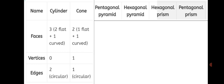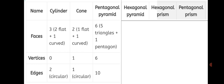Next, pentagonal pyramid. Pentagonal means it will have 5 triangles. Faces: a pentagonal pyramid has 5 triangles at the sides and 1 pentagon at the bottom, which makes total 5 plus 1, 6 faces. Vertices: the 5 vertices of the pentagon at the bottom and 1 top vertex makes total 5 plus 1, 6 vertices. Edges: the 5 edges below of the pentagon and 5 edges of the triangles formed, total 5 plus 5, 10 edges.